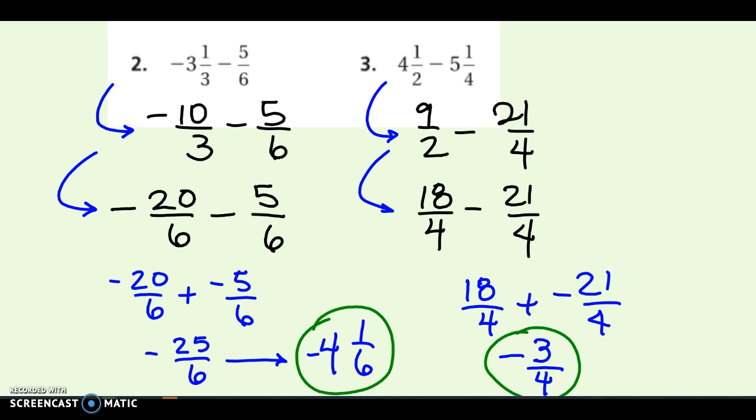In number 2 here, once I had common denominators, I rewrote it as add the opposite. So instead of subtracting, I just said it would be like adding negative 5 sixths and then I saw that I had negative 20 and negative 5 and those would combine to make negative 25 sixths, which is negative 4 and 1 sixth. And then in number 3, I already got common denominators. Again, I can rewrite that subtraction as adding the opposite or adding a negative 21 fourths. So now 18 fourths plus a negative 21 fourths overall would leave me with negative 3 fourths. So that's my answer there.